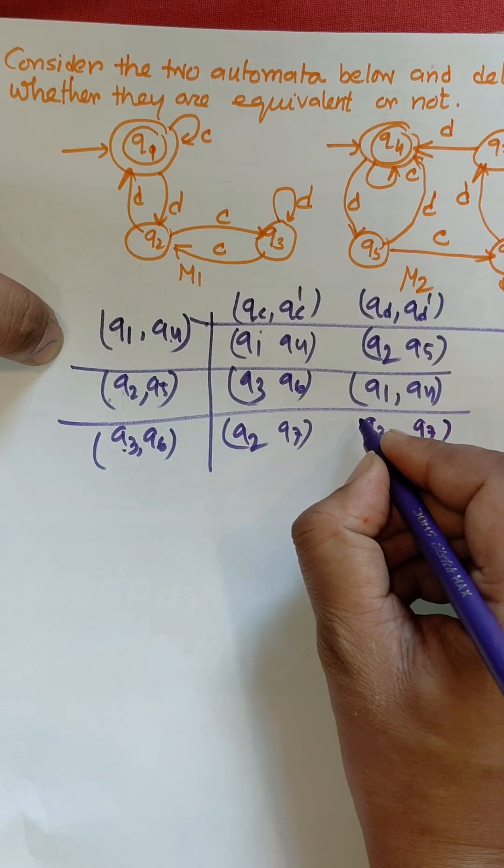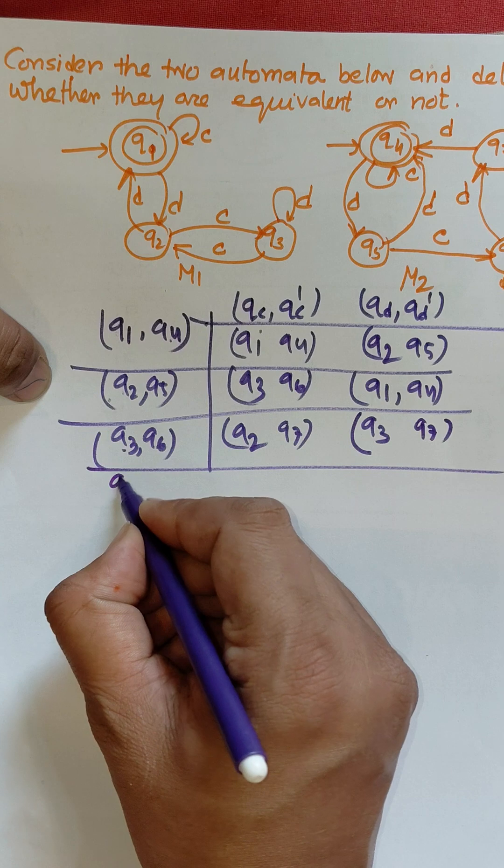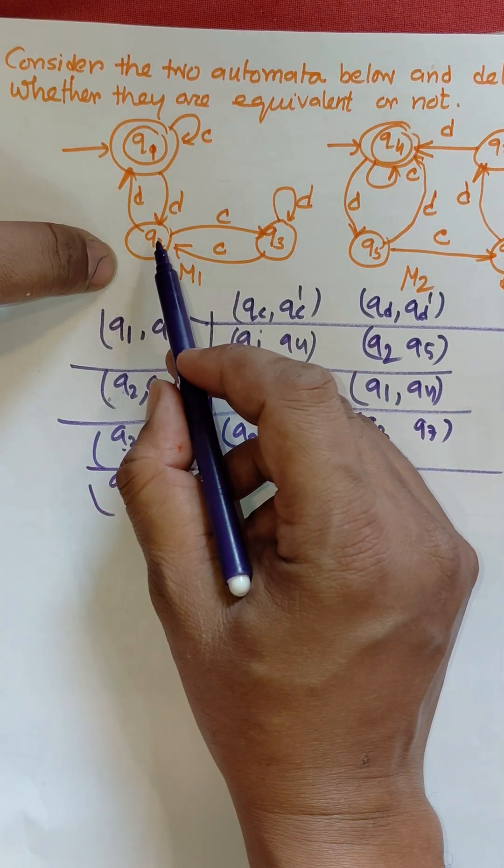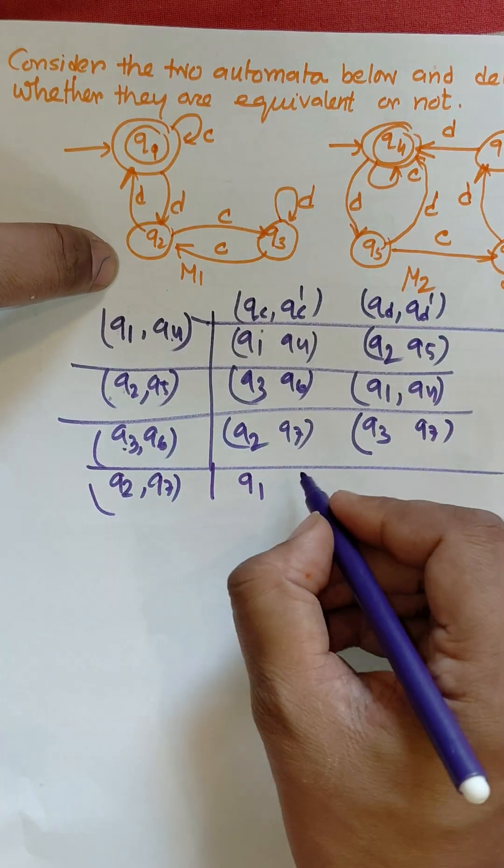Now for q2 to q7, for q2 to d is q1, for q7 to d is q4, both are final.